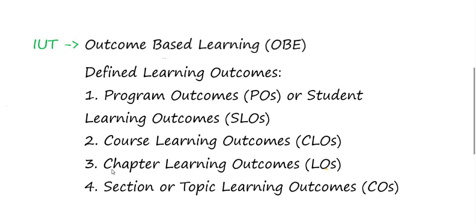The second category is Course Learning Outcomes or CLOs, which define what the student will be able to learn from and do once the course is completed. The third is chapter learning outcomes, which correspond to individual chapters, and the fourth corresponds to sections and topics respectively.